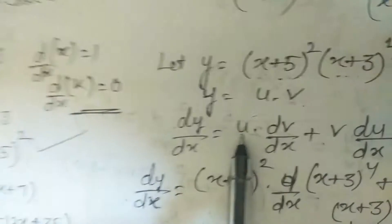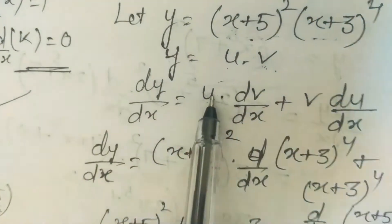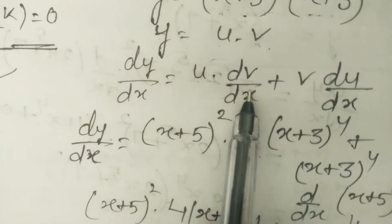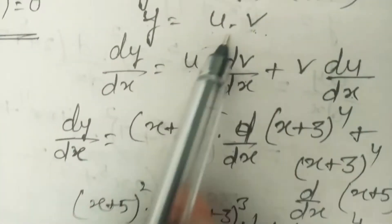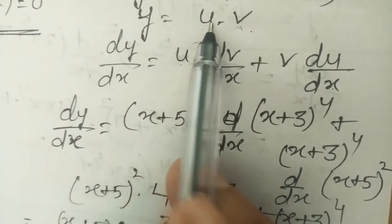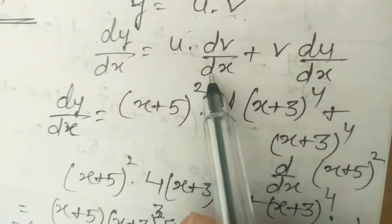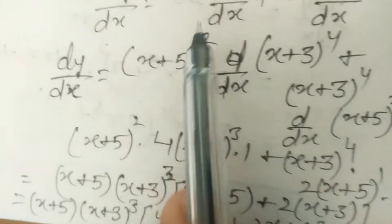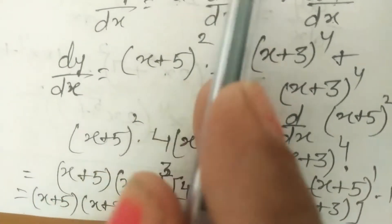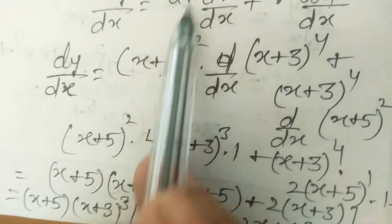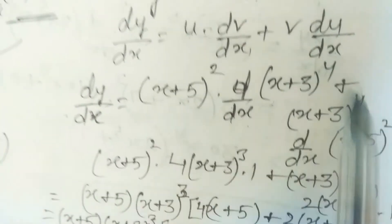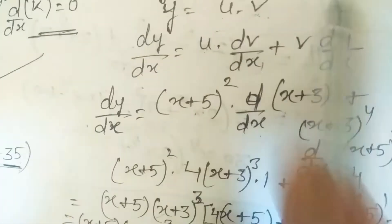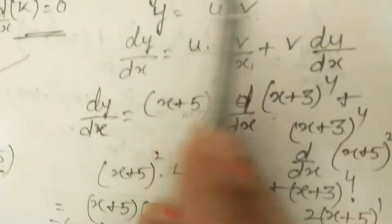The u·v rule: take the first function as-is times the derivative of the second, plus the second as-is times the derivative of the first. Here u = (x+5)², v = (x+3)^4. So: (x+5)²·d/dx[(x+3)^4] + (x+3)^4·d/dx[(x+5)²].